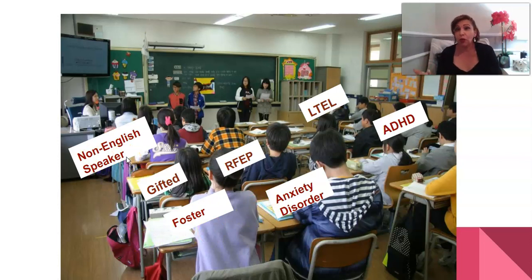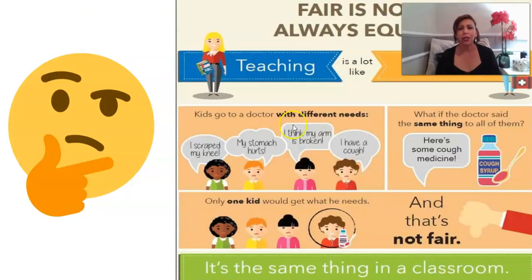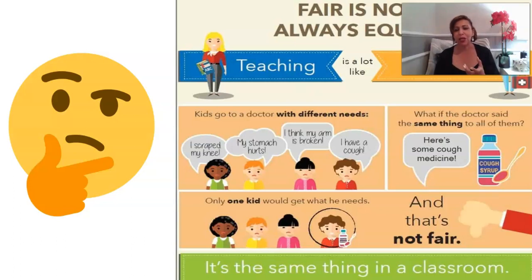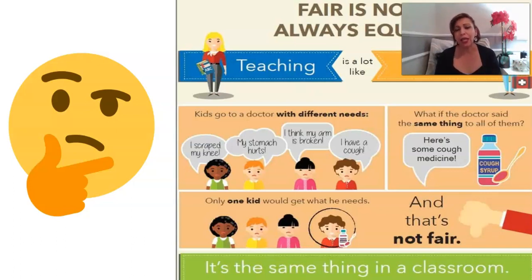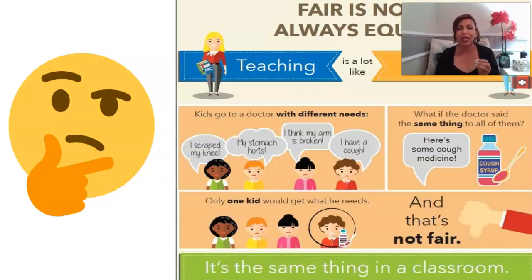We might have one, two, or a few students who are non-English speakers, so how do we make things accessible for them? I like to use this visual: we sometimes feel that we need to give everything the same way to students — that it wouldn't be fair otherwise. We really need to change that thinking. Whether it's business, medicine, or restaurants, we keep our clients in mind. We wouldn't give the same medicine or the same food to everyone. Same thing in our classroom — students need slightly different things. It's the same lesson, but we're going to adjust it so they can be successful.